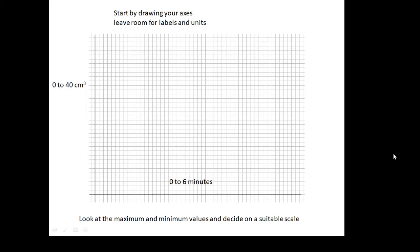So how do you plot a graph? The first thing you do is draw your axes. So with a ruler, nice neat, two lines, x-axis, y-axis. Leave room for your labels and units. Then look at the maximum and minimum values of the variables on each axis, and then decide on a suitable scale.